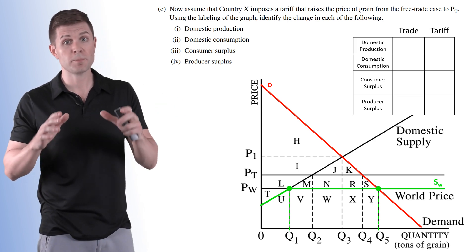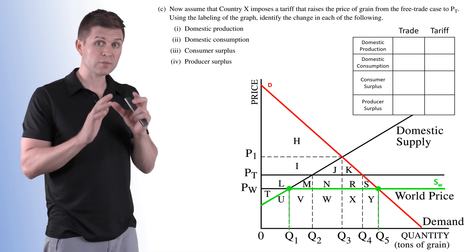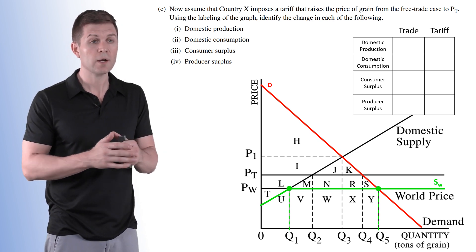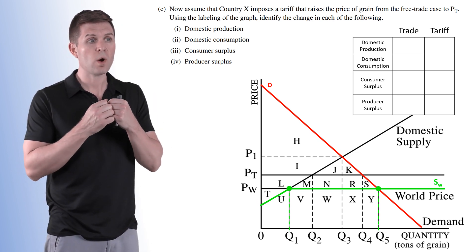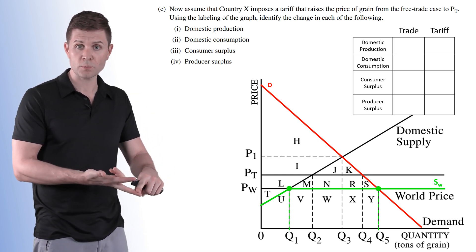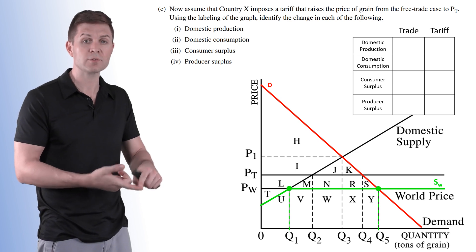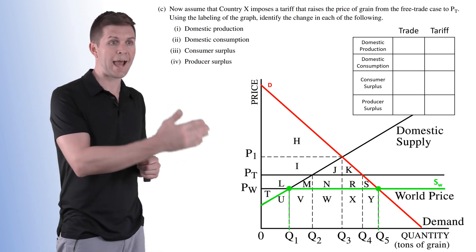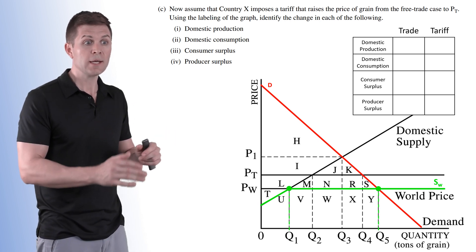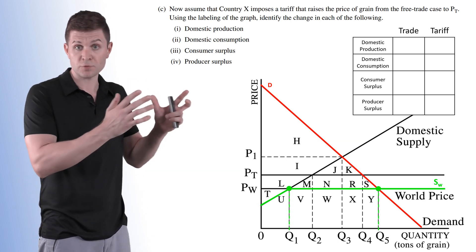Now Part C has us implementing a tariff. So we're gonna start off where we left off with Part B and then continue on from there because it's having us look at the change. It wants to know what's gonna change with domestic production, domestic consumption, consumer surplus, and producer surplus from going from free trade to adding the tariff. So we have a new price PT, the price with the tariff.